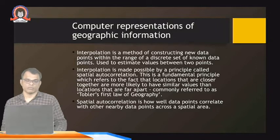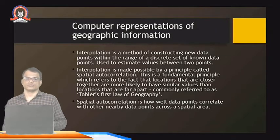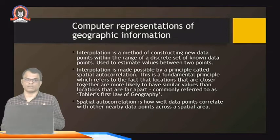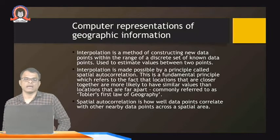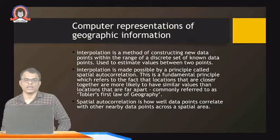Interpolation is a method of constructing new data points within the range of a discrete set of known data points, used to estimate values between two points. When representing this data, we give the start point and end point, and the in-between points are automatically plotted. Interpolation is made possible by a principle called spatial autocorrelation.